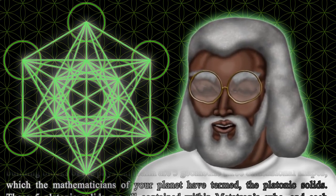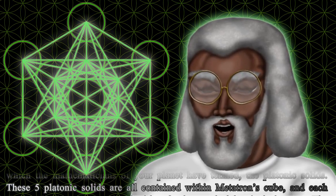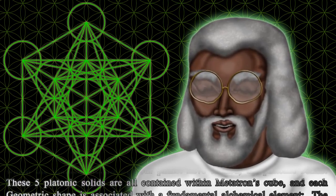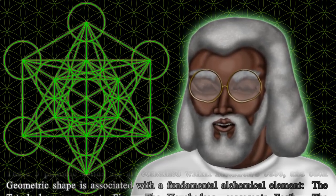The building blocks of the physical realm are five geometric three-dimensional shapes, which the mathematicians of your planet have termed the platonic solids. These five platonic solids are all contained within Metatron's cube, and each geometric shape is associated with a fundamental alchemical element.